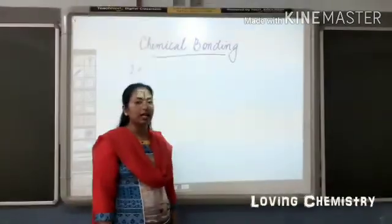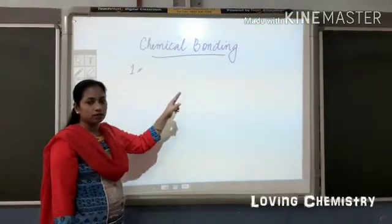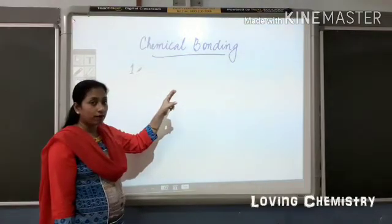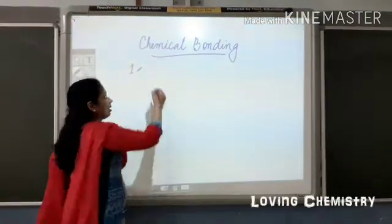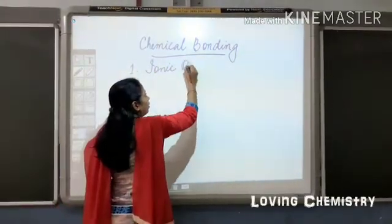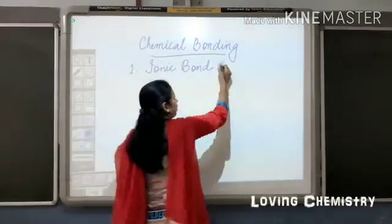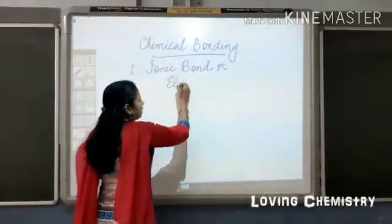So transfer of electrons. And the bond formed thus is called ionic bond or electrovalent bond.